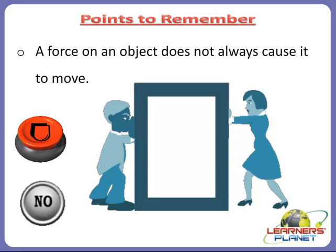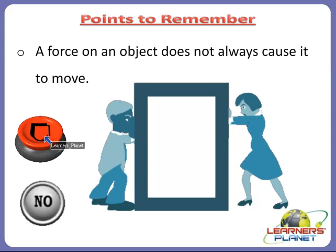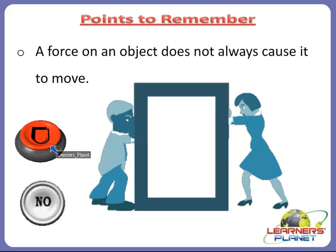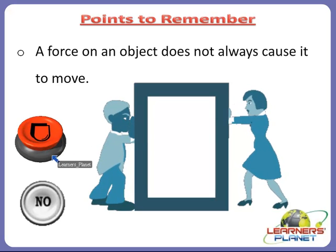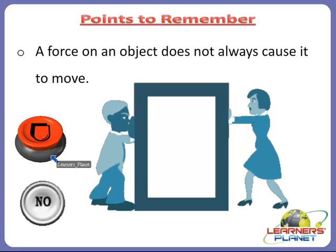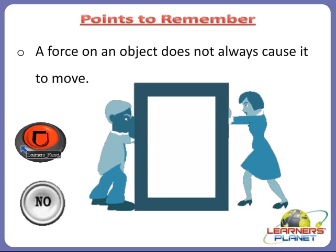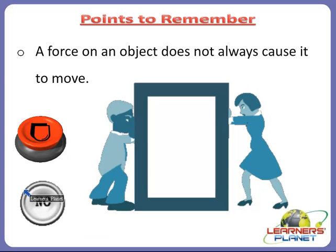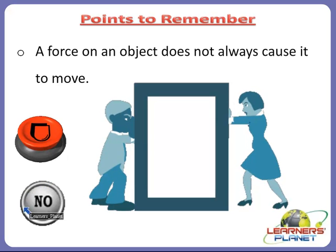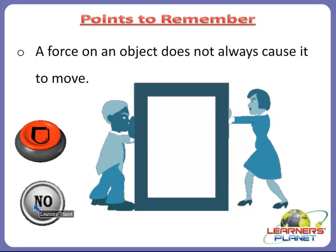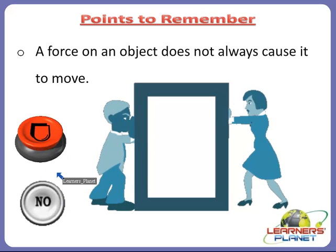Here we can see some buttons. When we press a button, we are applying force. The button is supported by a ring — we apply force on the button and the button is able to move, but not the ring which is supporting it. The same way, there are button designs supported by such rings. The button is able to press but the ring will not move even if we apply force on it. So we can conclude that force on an object does not always cause it to move.